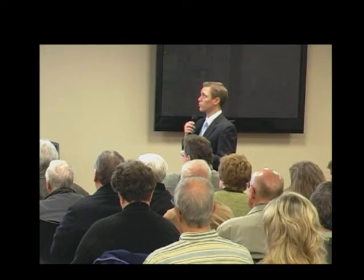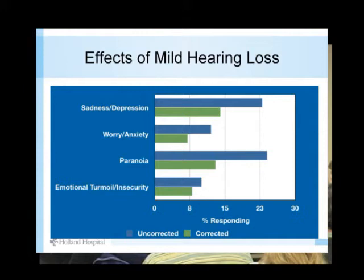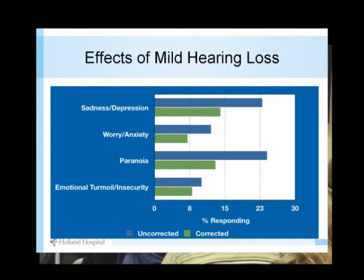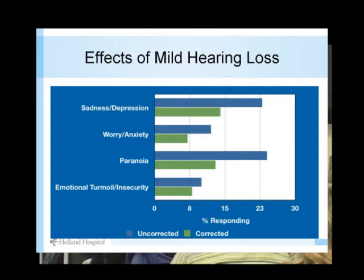Comparing people with moderate to severe hearing loss in the same format: about 30% who don't correct their hearing are sad or depressed, about 18% are anxious, and 35% experience paranoia. The treatment in most contexts means using hearing aids. For profound hearing loss — people who really can't hear even with hearing aids — these numbers go up dramatically, although there are many fewer such people.